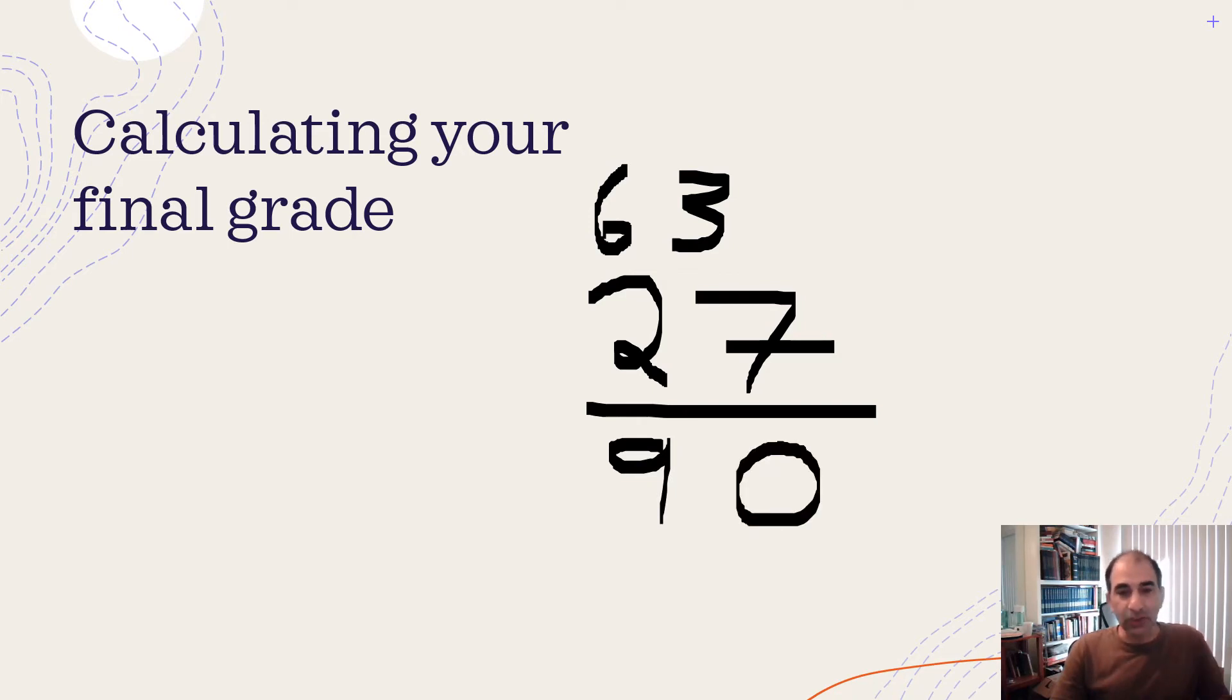Now, for those of you in History 111, remember there's still like two more points after you take the ID exam - the Schindler's List assignment. That's two points right there you can add into it. For those in History 110, all your points are already calculated by the time you take your final ID exam. For those in 111, you still have those two points that can make a difference.